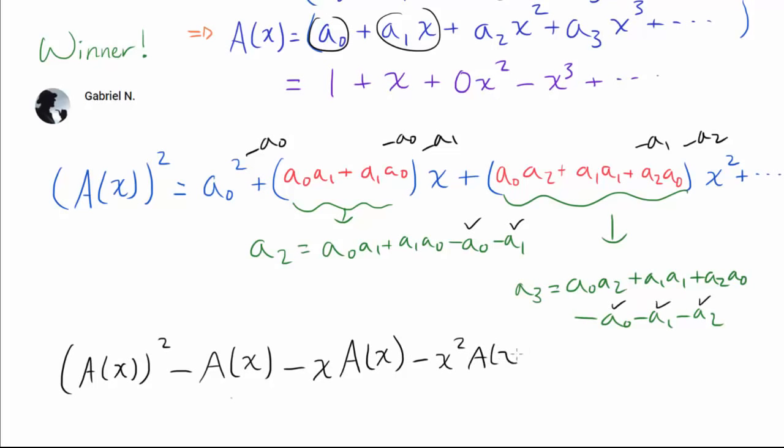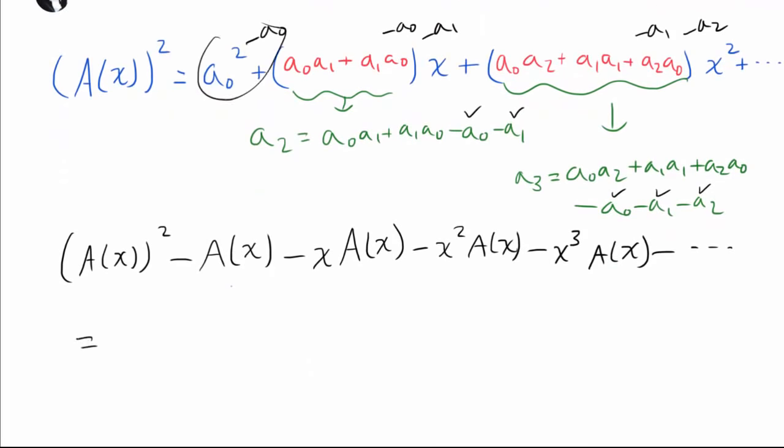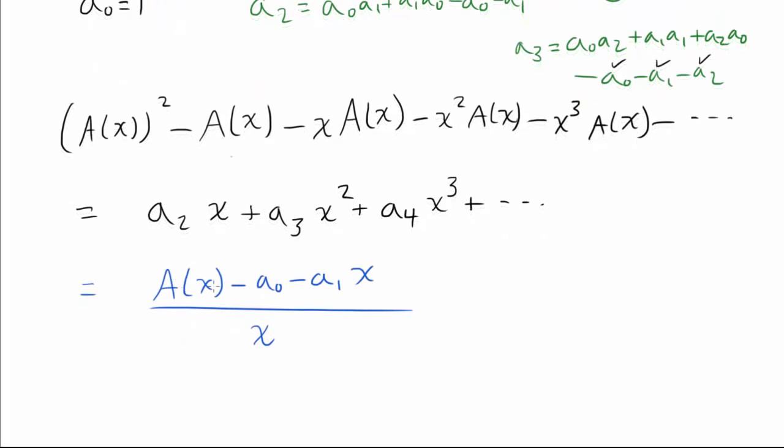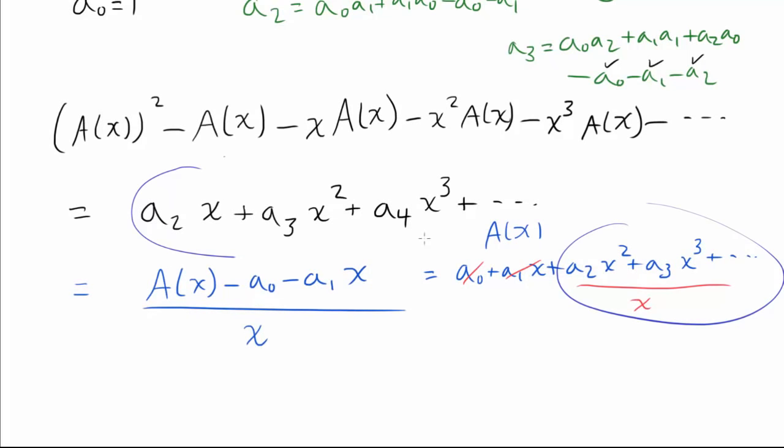Then we take away x²A(x). Then we take away x³A(x). And x⁴A(x). And we keep on subtracting these A(x) times powers of x in order to ensure that for every coefficient, we have exactly the form of the recurrence relation. So by the end of this, we're going to have a₀² minus a₀, which is 0 because a₀ is 1. So this thing goes away. But we're going to have a₂ times x because this entire thing is going to become a₂. Then we are going to have a₃x², a₄x³, and so on. And we see that this thing, in turn, is A(x) minus a₀ minus a₁x, all divided by x. Because from A(x), we are taking away a₀ and a₁x, then dividing the rest of the generating function by x. And we clearly see that these two expressions are equivalent.